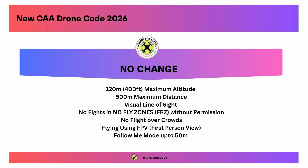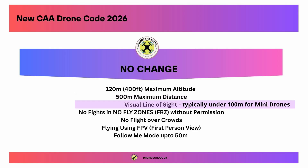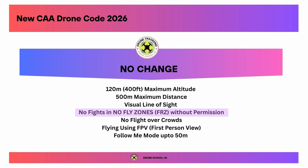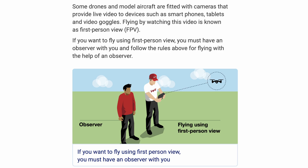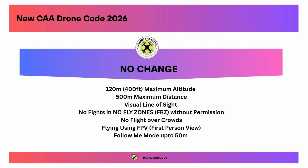To tie everything together, here are the areas that haven't changed. Maximum altitude is still 120 metres (400 feet). Maximum distance you can fly the drone from you is 500 metres. Visual line of sight rules remain the same. There is no flight in a no-fly zone or FRZ unless you have permission, and no flights over crowds under any circumstances with any drone. Flying using FPV goggles is still the same — you need a spotter because you can't see the drone while wearing goggles. And in follow-me mode you can fly the drone up to 50 metres away from you.